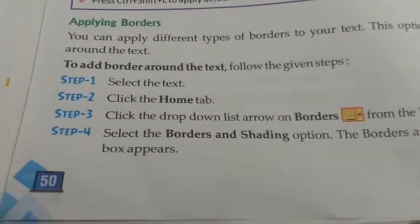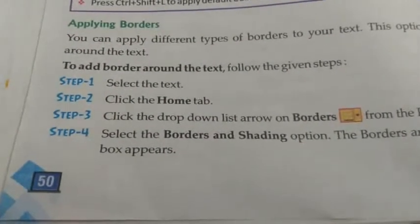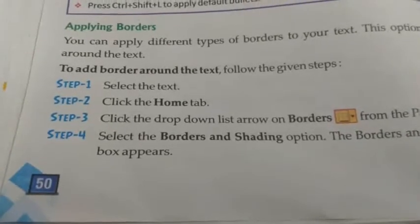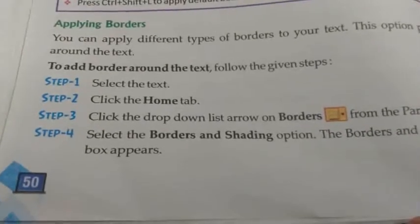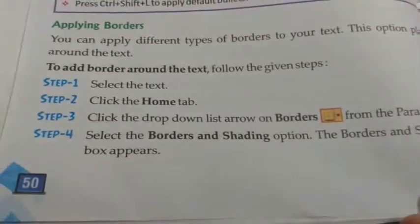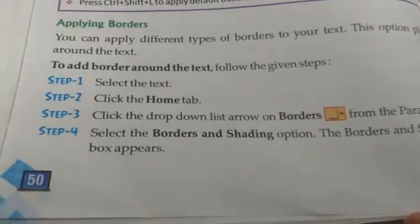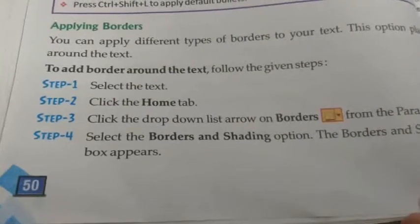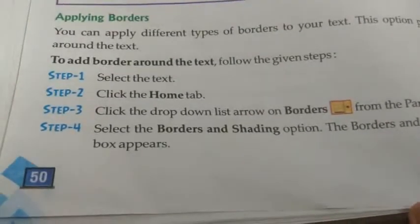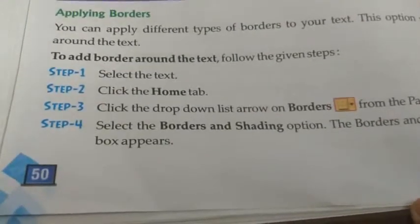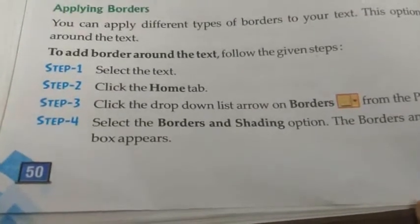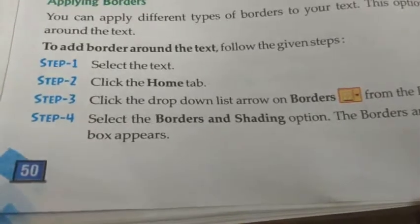Now, applying a border. To apply a border, first select the text, then go to the Home tab. From the Home tab, select Borders from the Paragraph group, then select the Borders and Shading option.